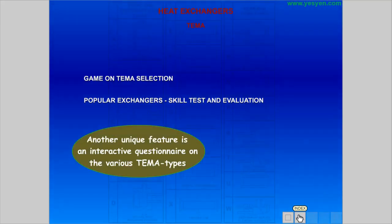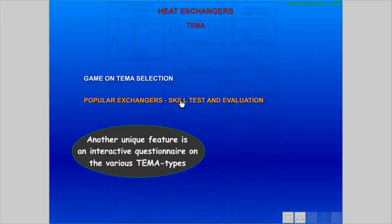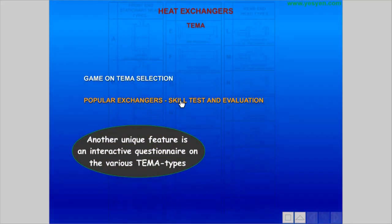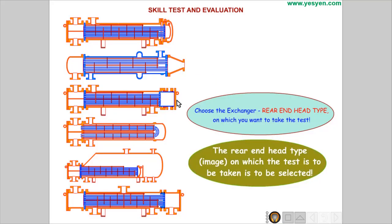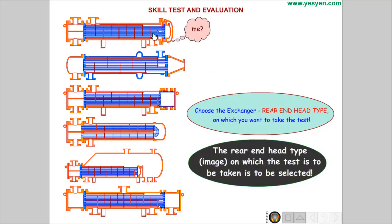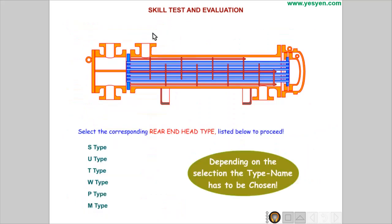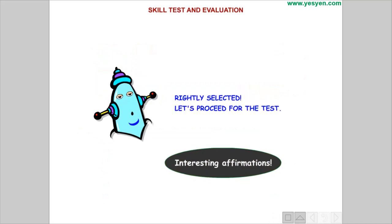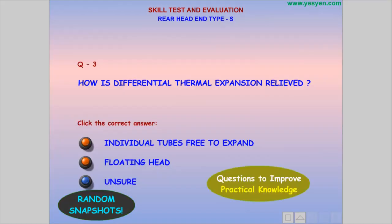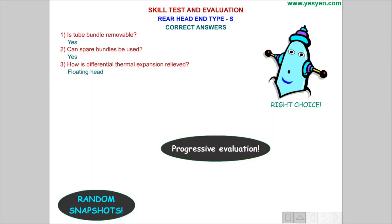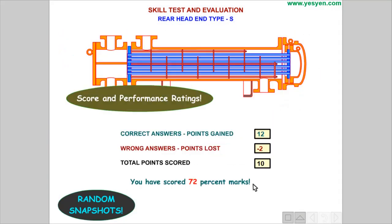Another unique feature is an interactive questionnaire on the various TEMA types. The rear-end head type on which the test is to be taken is selected. Depending on the selection, the type name has to be chosen, with interesting affirmations and random snapshot questions to improve practical knowledge. Progressive evaluation provides score and performance ratings.